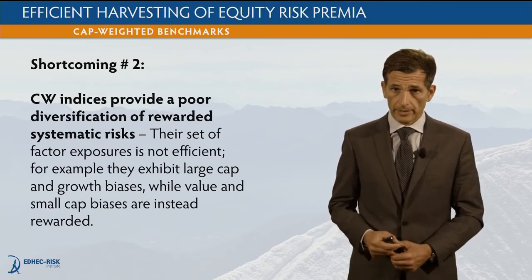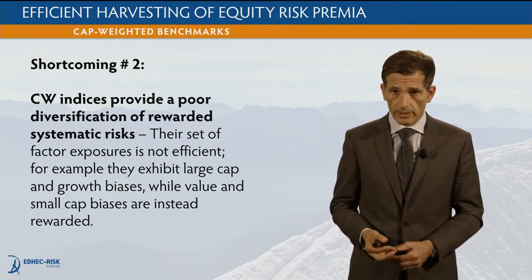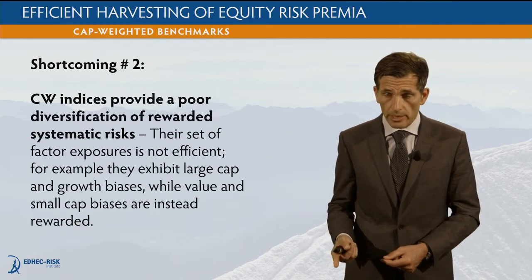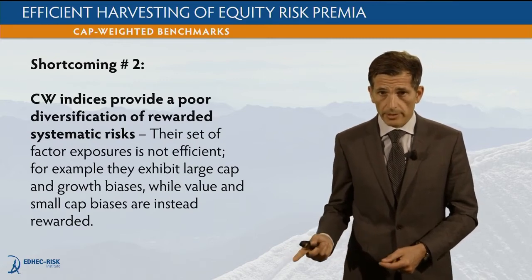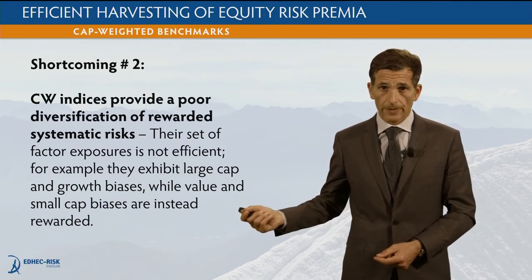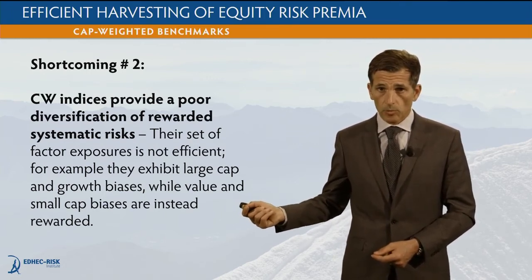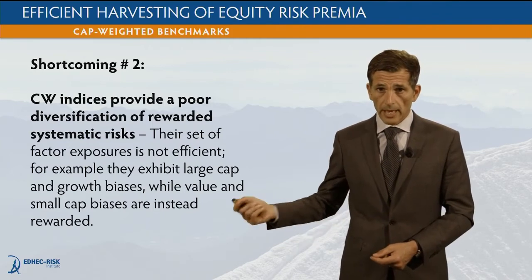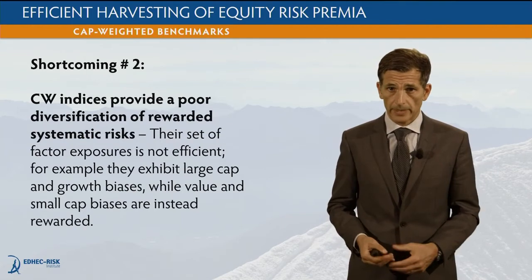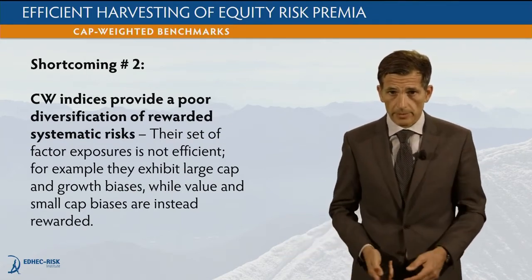The problem is that, by the very nature of the way they are constructed, cap-weighted indices tend to overweight the wrong stocks. They overweight the largest cap stocks and the growth stocks — so they get the wrong factor exposure. They have a growth bias when they should have a value bias, and they have a large cap bias when they should have a small or mid-cap bias, if they were to efficiently harvest the value and size risk premia.